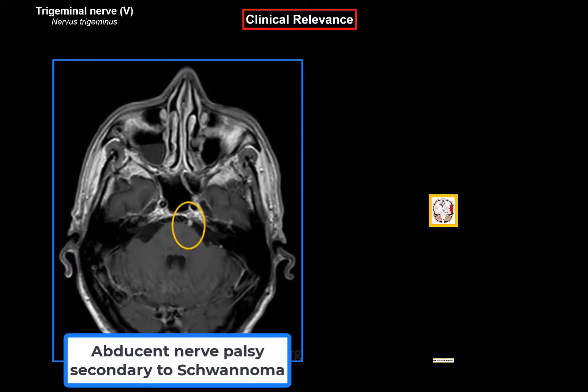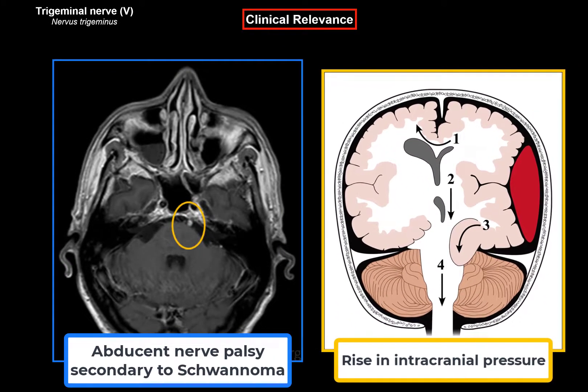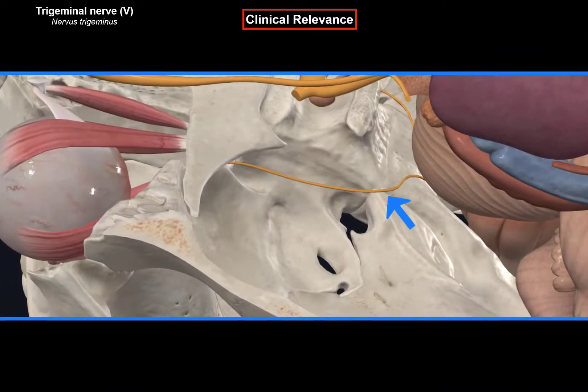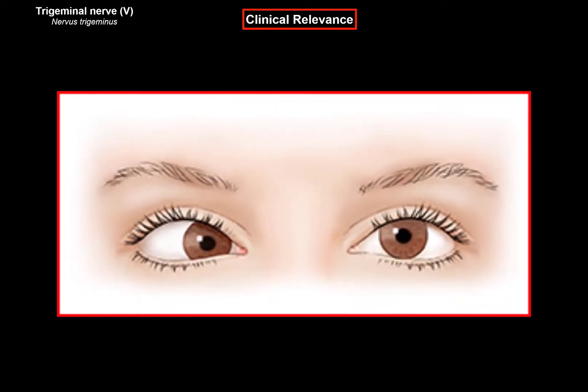Understanding the abducent nerve's role has clinical implications. All extraocular muscles work synergistically to move the eyeball. The abducent nerve can easily get compressed due to a lesion or rise in intracranial pressure, especially along its course where it stretches while sharply curving at the petrous part of the temporal bone. Compression of the abducent nerve would cause paralysis of the lateral rectus muscle, leading to medial deviation of the affected eye. As a result, the patient will have a fully adducted eye at rest and be unable to abduct their eye.